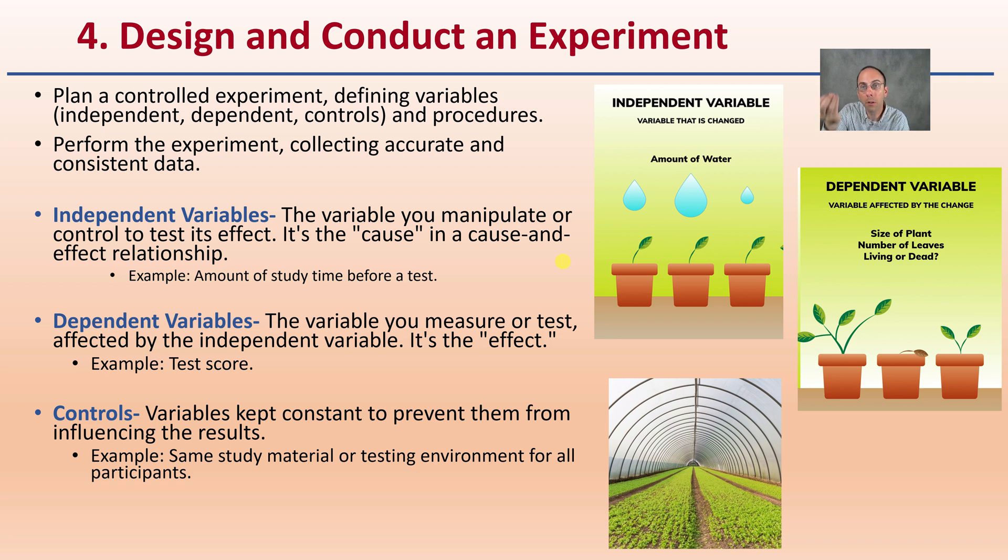So the independent variable is how much time I give you from now until the test. The dependent variable would be your actual test score. Now the controls would be the study materials I give you, the videos here, and things like that would be the things that we keep constant as we compare one unit to another. Maybe I could see if I give you more time or less time how that impacts your test score.